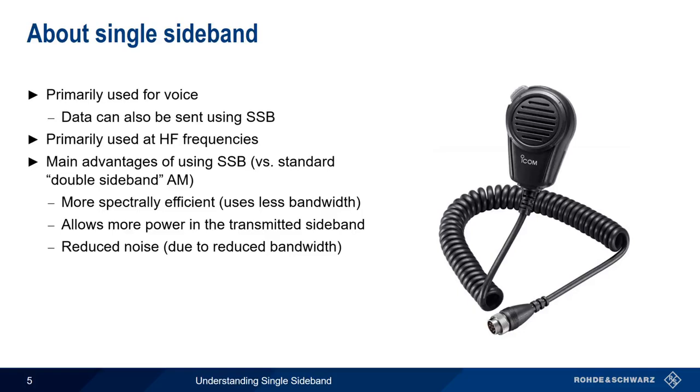With regards to which sideband should be used, there's no real difference or advantage in using upper versus lower sideband. This is usually decided by mutual agreement or by convention. For example, in amateur radio, lower sideband is used for most transmissions below 9 MHz, and upper sideband is used above 9 MHz.